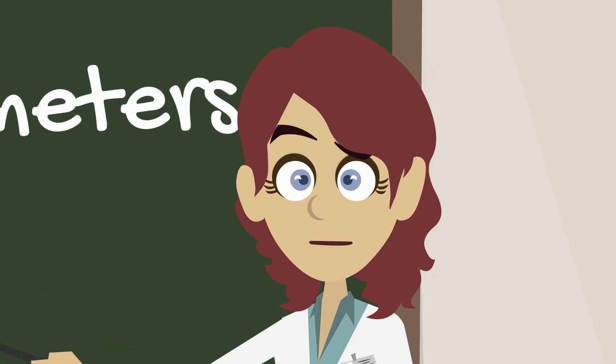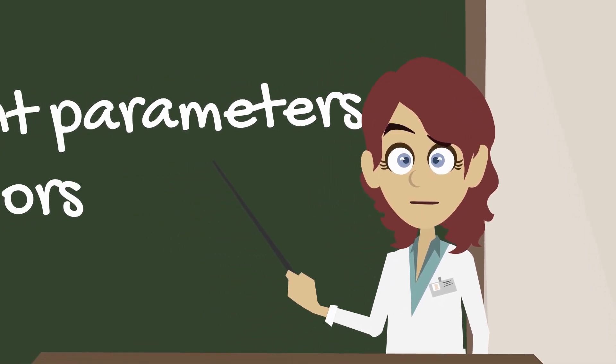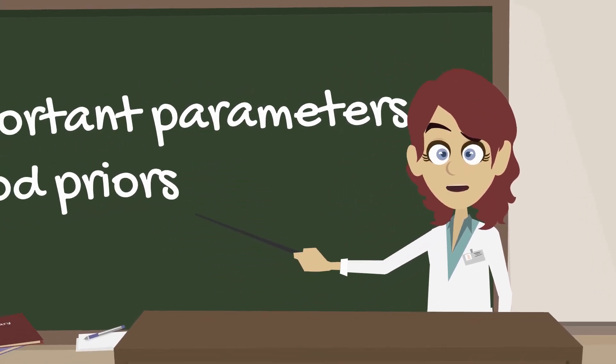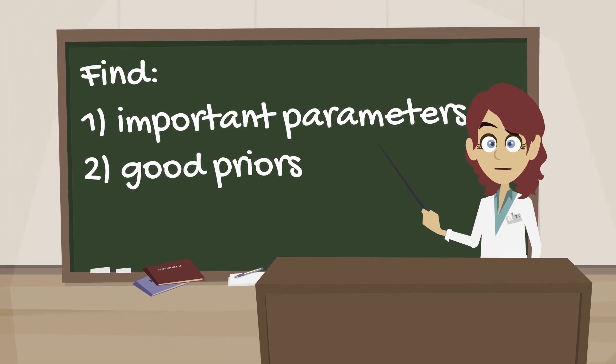In this lecture we will answer the following two questions. First, given an algorithm, what are generally the most important hyperparameters to optimize? Second, what are good priors to sample from in the optimization procedure?